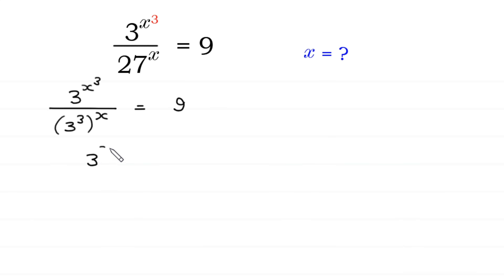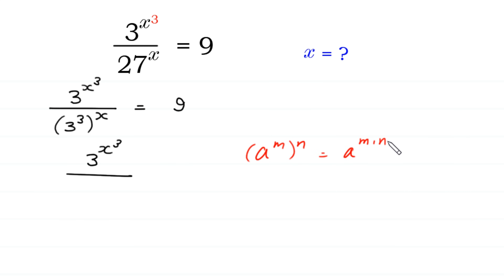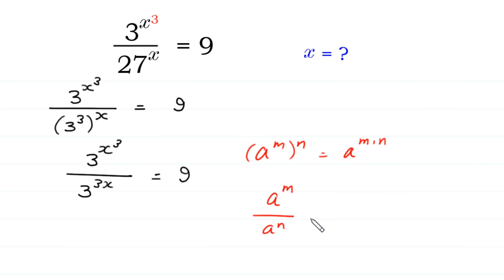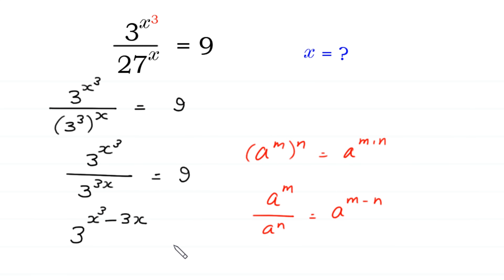Next, 3 to the power x cubed divided by — according to the property of exponents, a to the power m, whole to the power n, is equal to a to the power m times n. This power 3 will be multiplied by this power x, giving 3 to the power 3x. So we have 3 to the power x cubed over 3 to the power 3x is equal to 9, which we can write as 3 to the power x cubed minus 3x is equal to 3 squared.